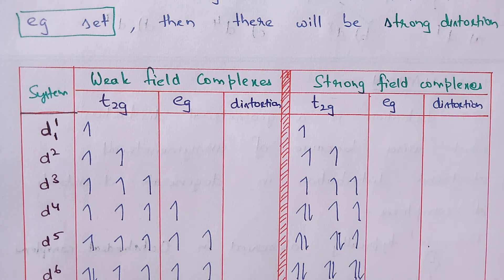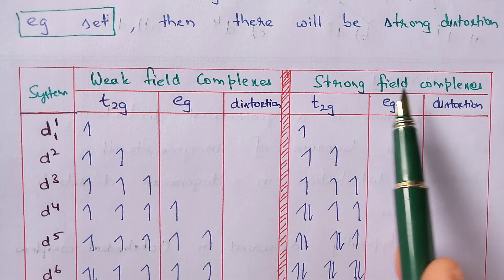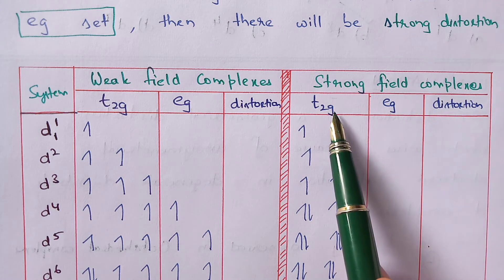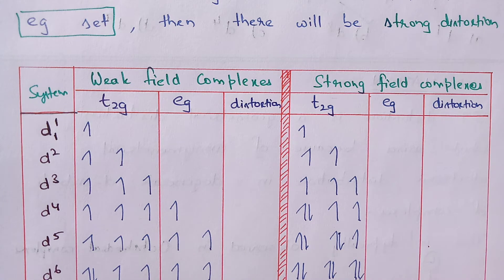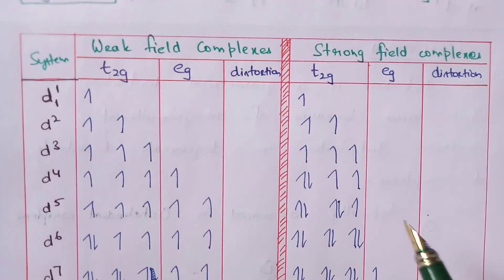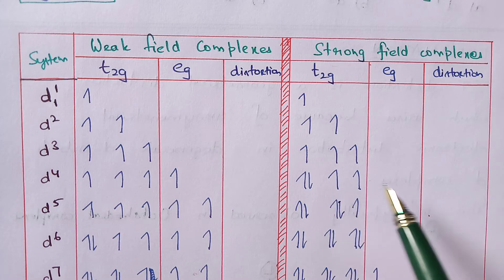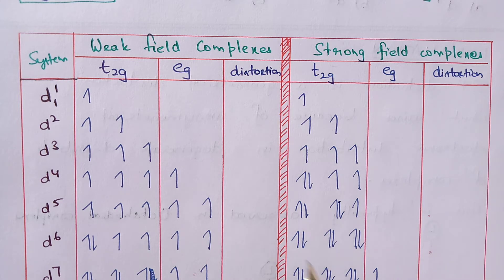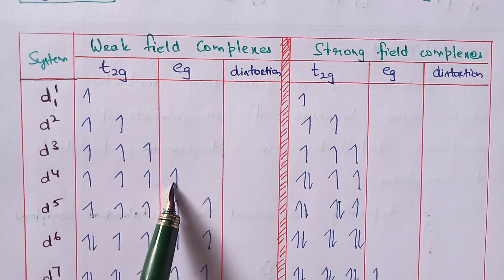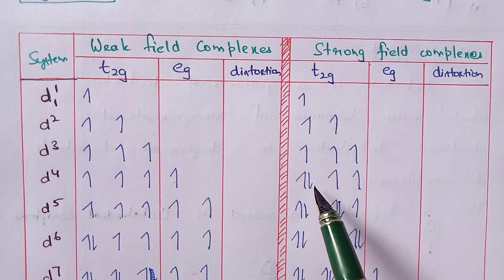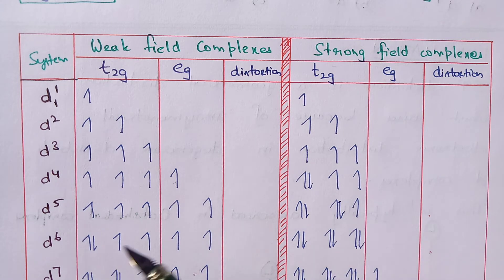You know the difference between weak field and strong field. Strong ligands create a very high energy gap between T2G and EG, so electrons get paired up in T2G instead of entering EG. We learned this in crystal field theory. Up to D3, both weak and strong field have the same situation. Coming to D4, in weak field the electron enters EG, while in strong field it gets paired up. I have all electronic distributions for D1 to D10 systems in both weak field and strong field cases.